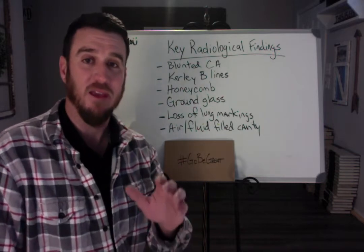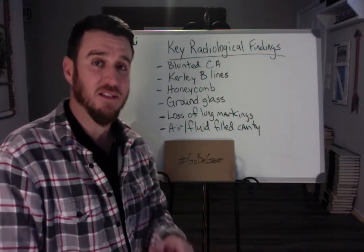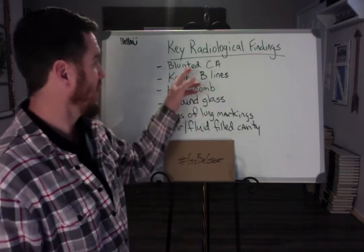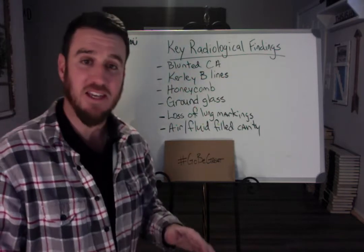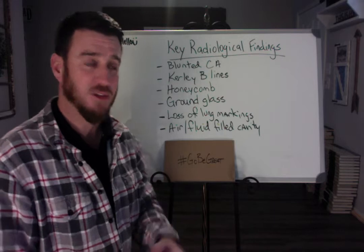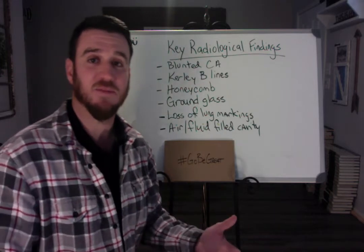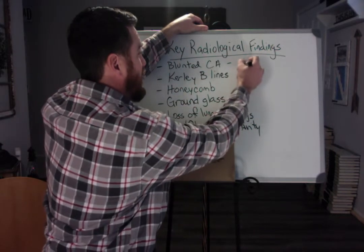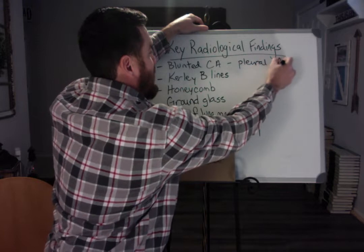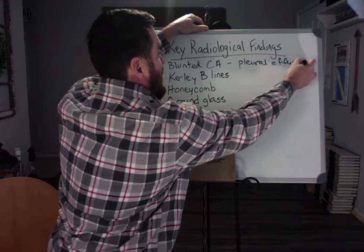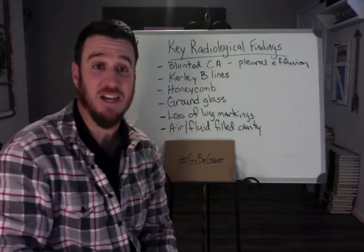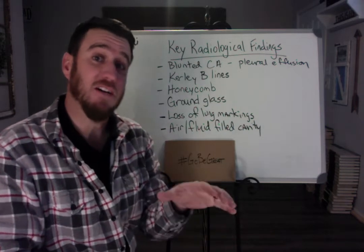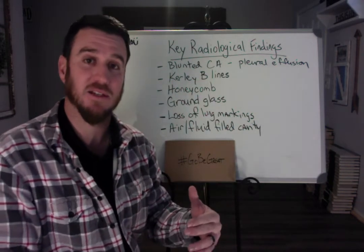These terms are very specific and key to the disease processes we're talking about. So let's get started with the first one, which I believe everybody knows. If you're taking your test and the example says you're looking at an x-ray and a patient presents with blunted costophrenic angles — blunted costophrenic angles means we're talking about a pleural effusion, every single time, no questions asked. If nothing else, it puts your mindset in the right disease process.